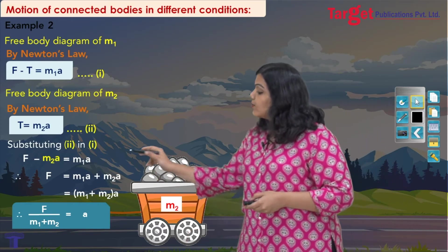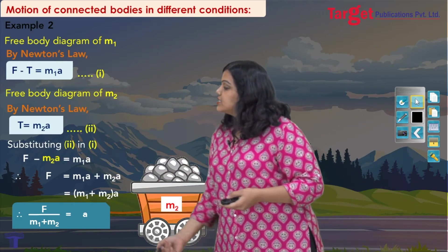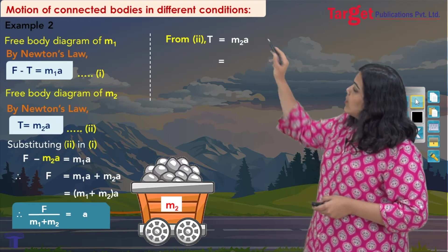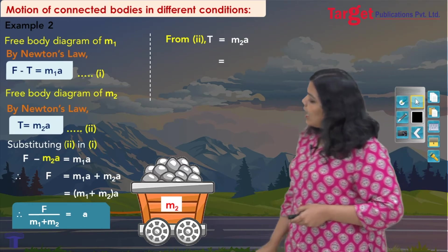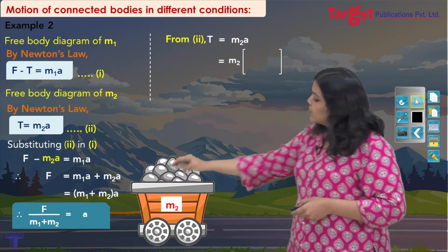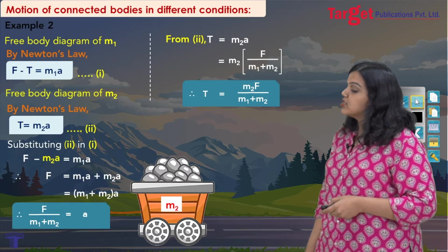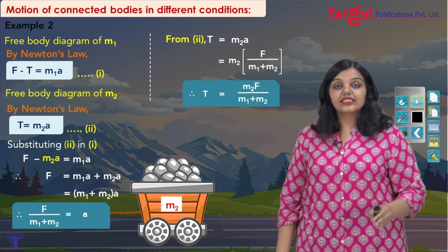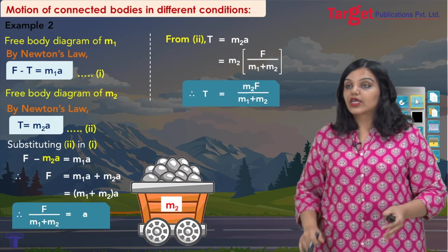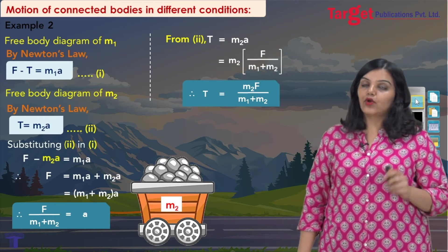As before, I use this expression for acceleration to write down T. Rewriting equation 2 — T equals m2a — and substituting the expression for a, I get T equals m2F divided by (m1 plus m2). It is a very similar sum solved in exactly the same way. We obtained the equations for acceleration and tension, which were the only unknowns in our problem.